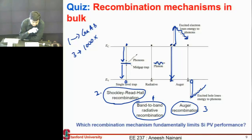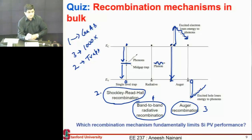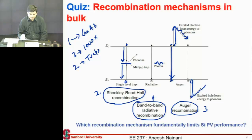JP is saying that number two — SRH — dominates given that you have more traps. So what do you think limits recombination in silicon, the dominant material for photovoltaics? More than 85 percent of cells are made in silicon. What is the dominant recombination mechanism in silicon?